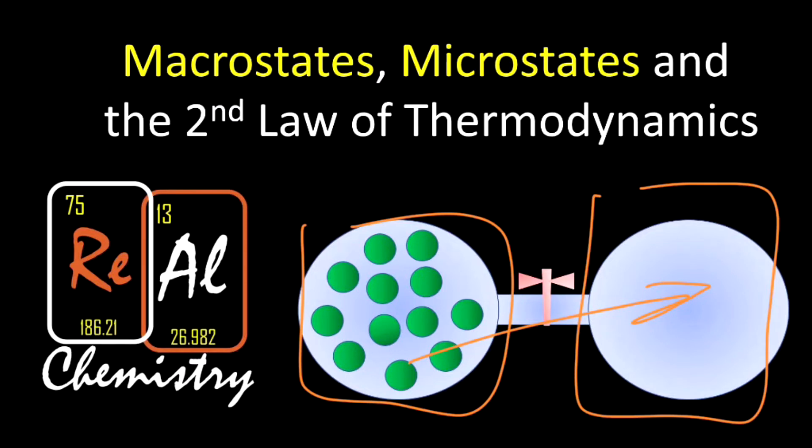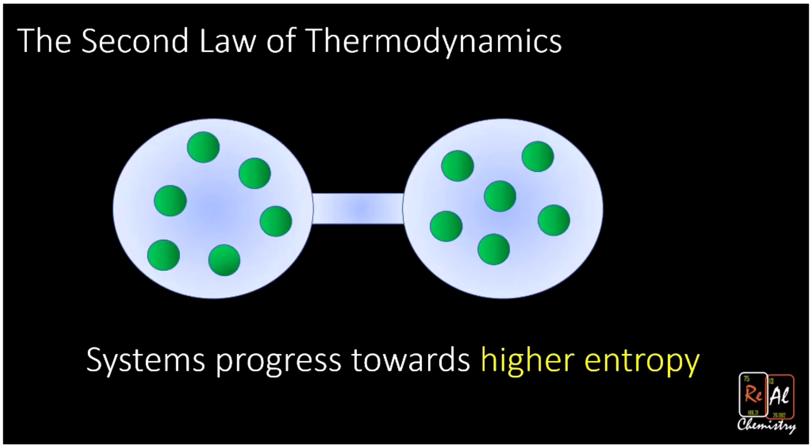And ultimately what we're going to do is restate the second law of thermodynamics in a way that explains it in terms of just plain old statistics. So here's the second law of thermodynamics. It tells us systems progress towards higher entropy.